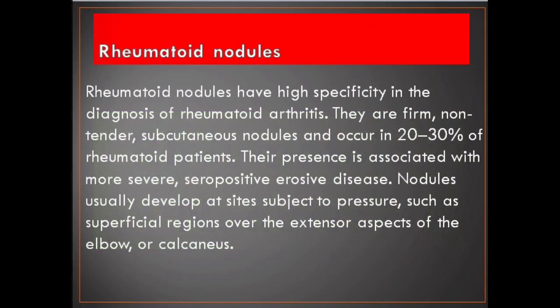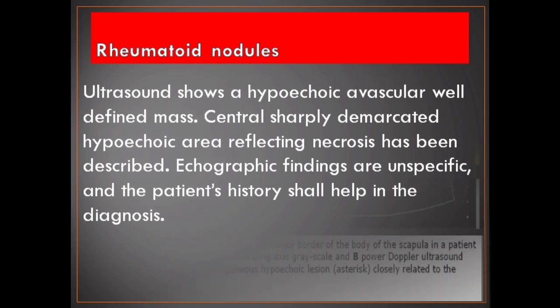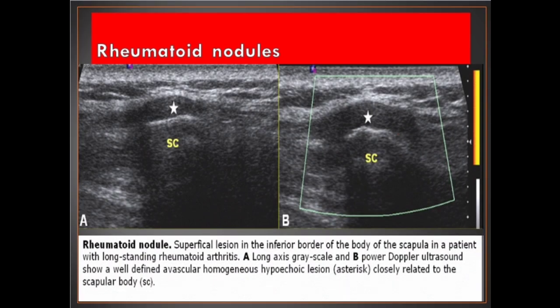Rheumatoid nodules have high specificity in the diagnosis of rheumatoid arthritis. They are firm, non-tender subcutaneous nodules occurring in 20–30% of rheumatoid patients, and their presence is associated with more severe, seropositive erosive disease. Nodules usually develop at sites subject to pressure, such as superficial regions over the extensor aspects of the elbow or calcaneus. Ultrasound shows a hypoechoic avascular well-defined mass. A central sharply demarcated hypoechoic area reflecting necrosis has been described. Ecographic findings are non-specific and the patient's history shall help in the diagnosis.